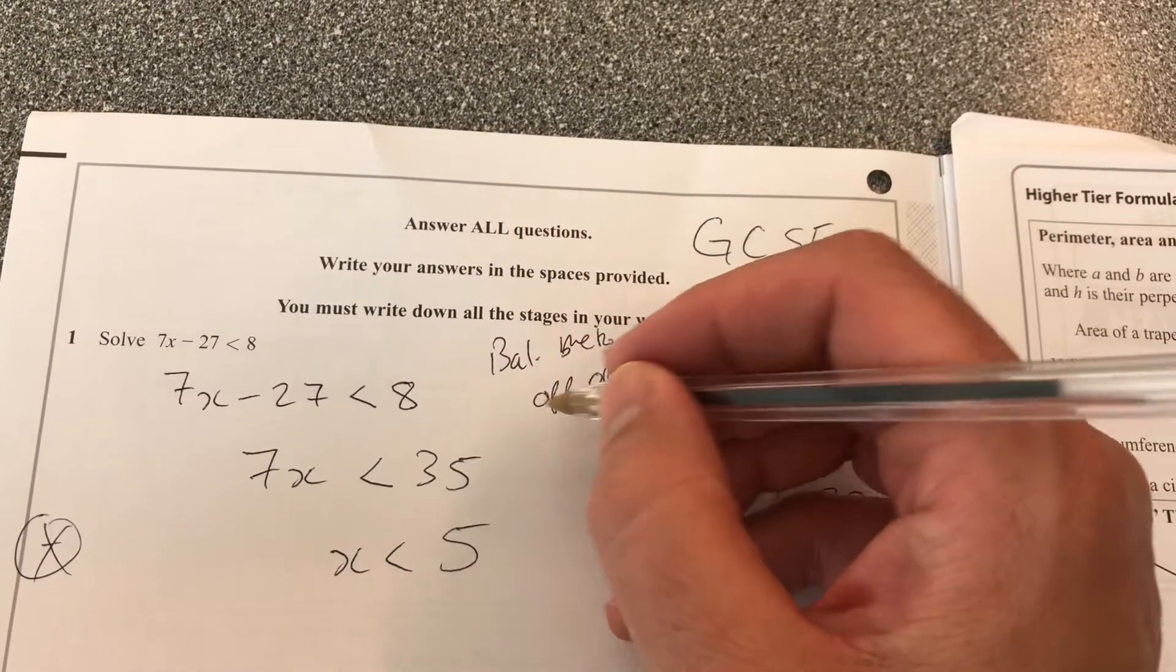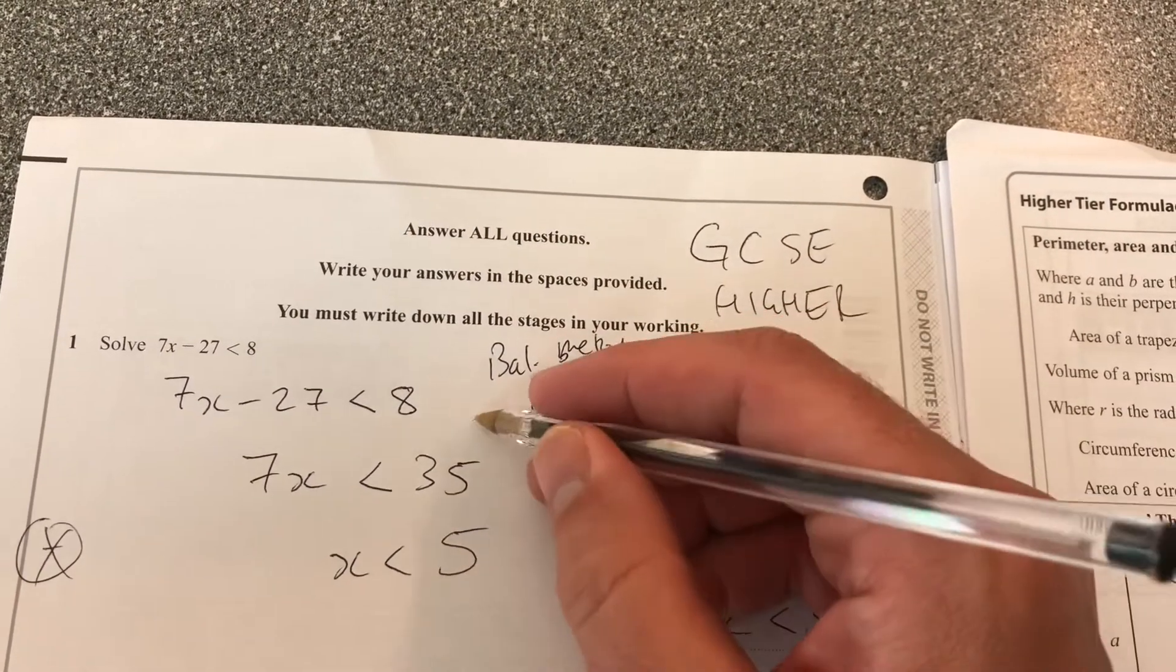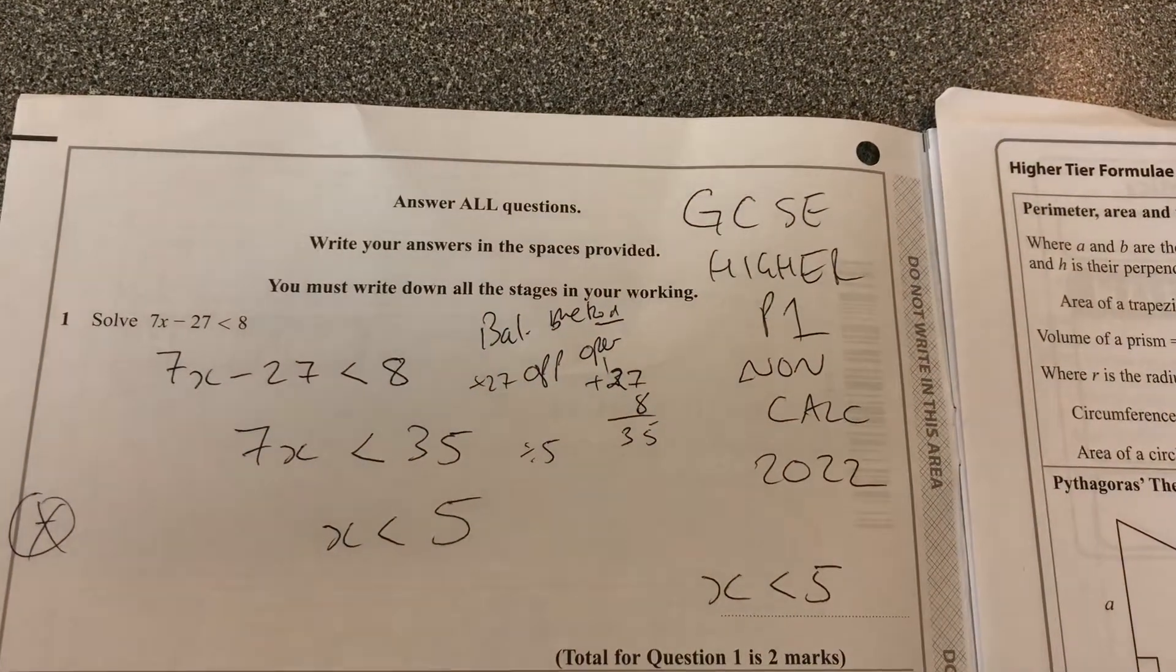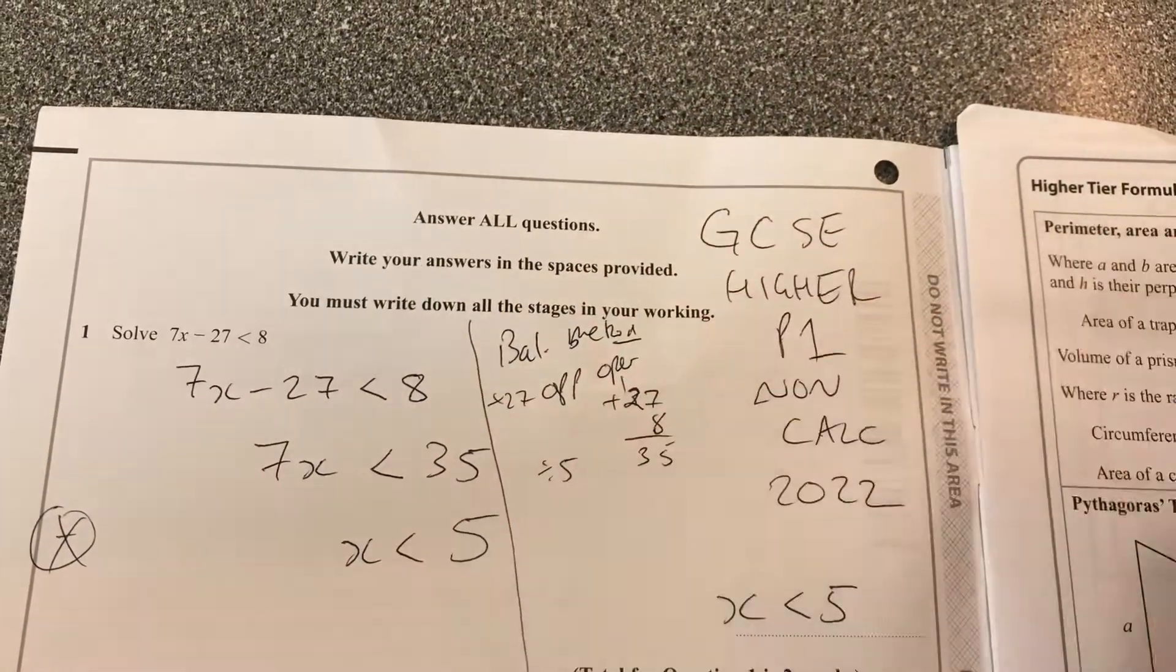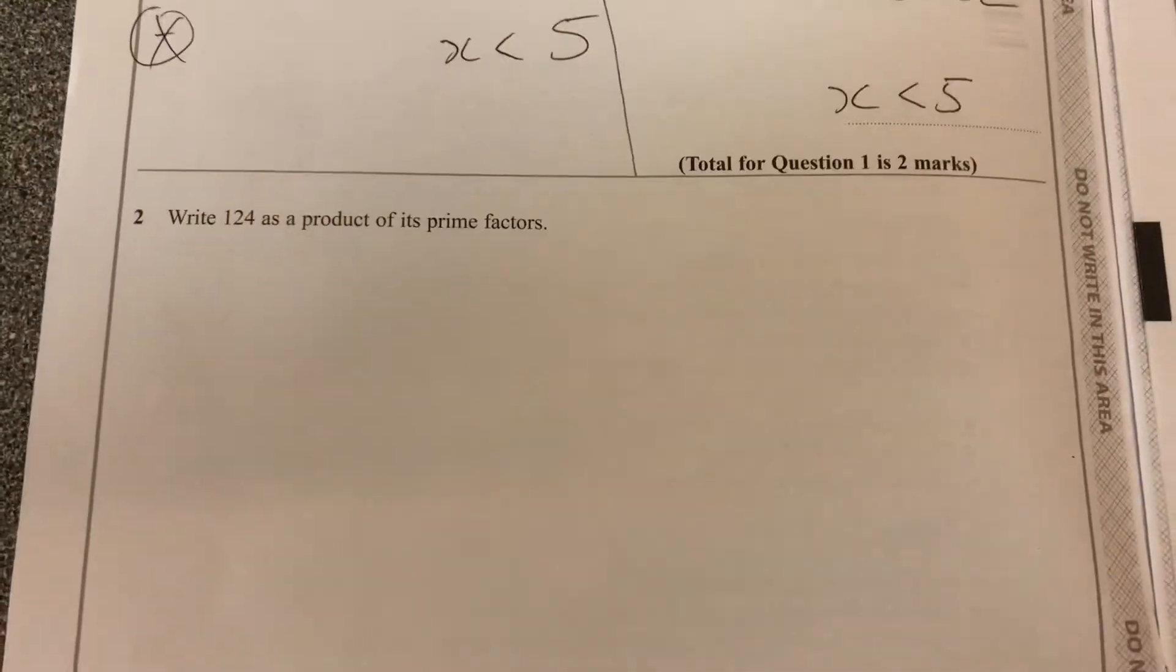I've added 27 to both sides. And then I've divided by 5, in case you want to know what we're doing there. Okay, let's move on to question 2.